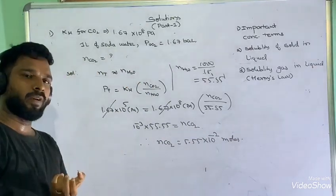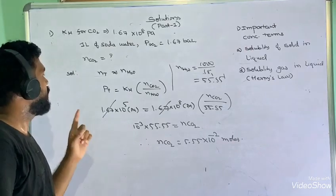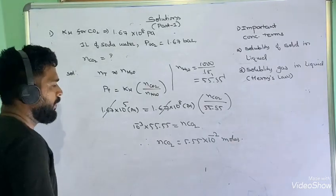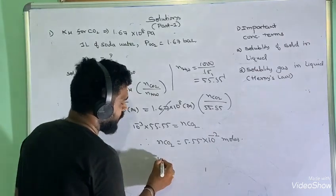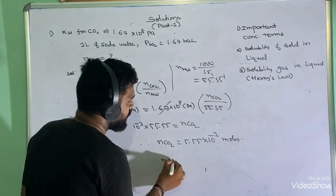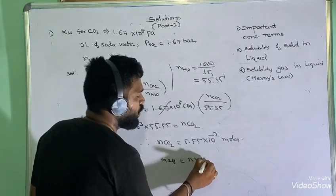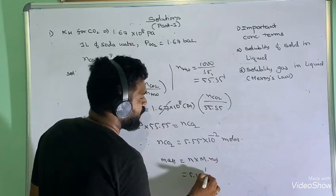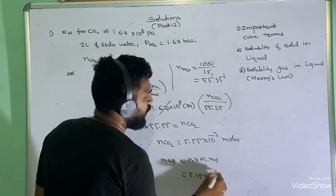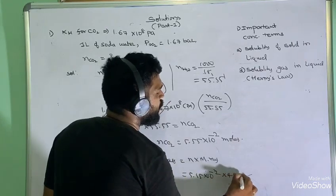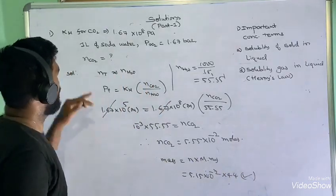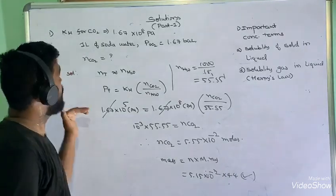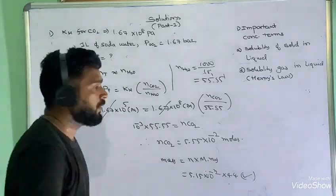If the question asks for the mass of CO₂ instead of moles, multiply the number of moles by the molar mass: mass = 5.55 × 10⁻² × 44 grams. This is how we solve problems related to Henry's law constant.